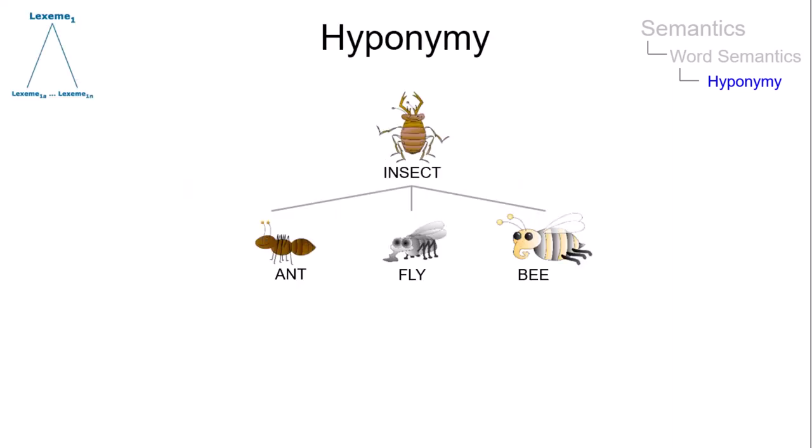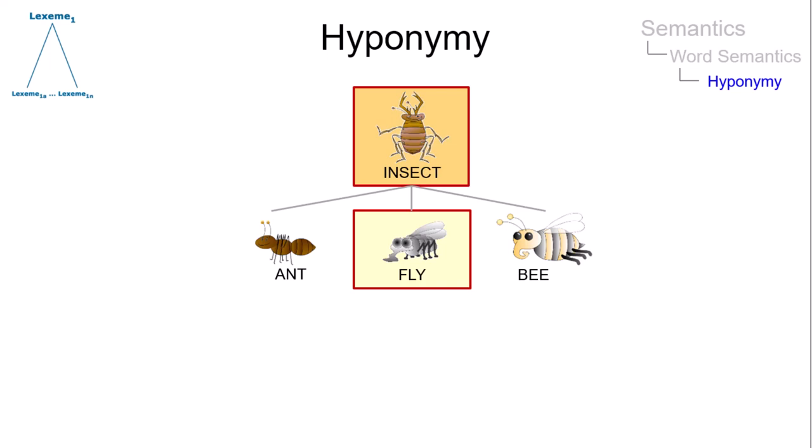Hyponymy is a hierarchical sense relationship between lexemes based on the notion of inclusion. A less general term includes the meaning of a more general term. The less general term is called the hyponym, and the more general term is known as the superordinate term or hyperonym.